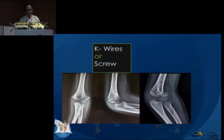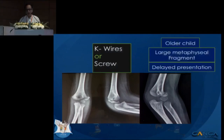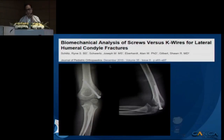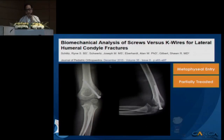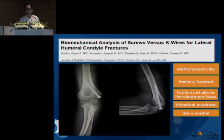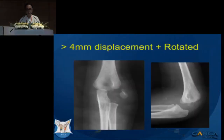On the question of K-wires versus screws: a study found that the screw was biomechanically superior to K-wires. Key points for screw use: metaphyseal entry, partially threaded screws are better, position just above the olecranon fossa, aim for bicortical purchase, and use a washer where possible.